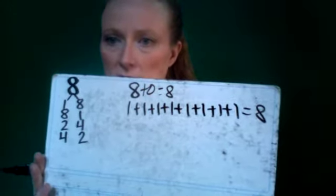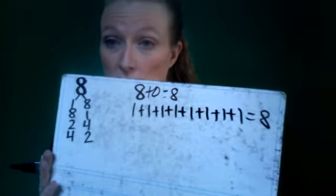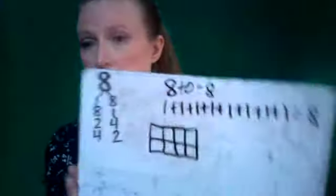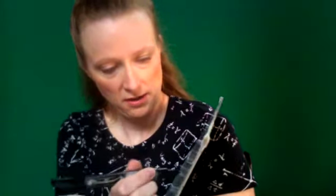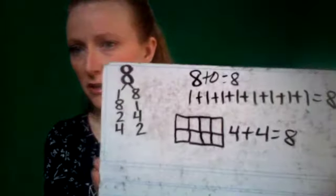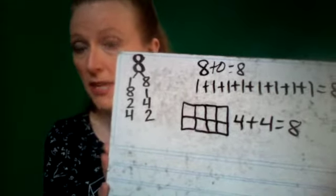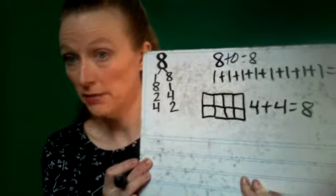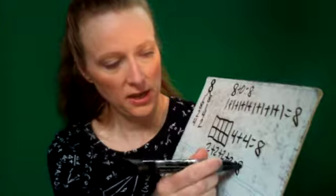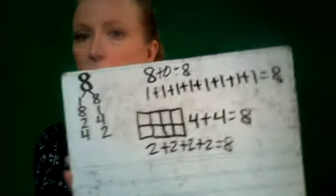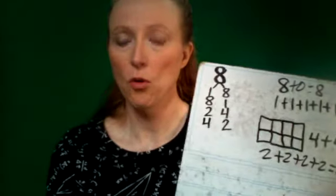For eight rows of one, your repeated addition would be one plus one plus one plus one plus one plus one plus one plus one equals eight. If I do two rows of four — there's one row, there's my two rows with four in each — two groups of four gives you four plus four equals eight. But if I switch it to four columns of two, four groups of two, it becomes two plus two plus two plus two equals eight.